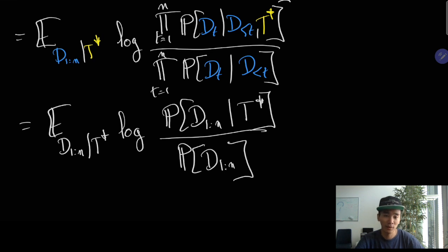Which simply corresponds to the probability of all of the data given the theory T star or given the predictions of Solomonoff's demon. Now interestingly we can invoke another lemma.